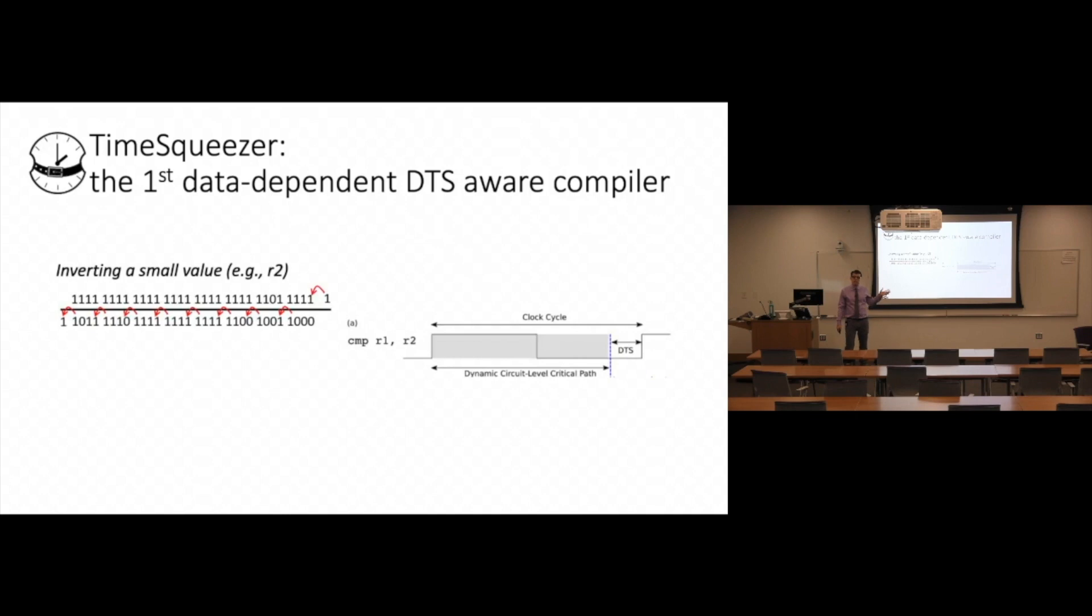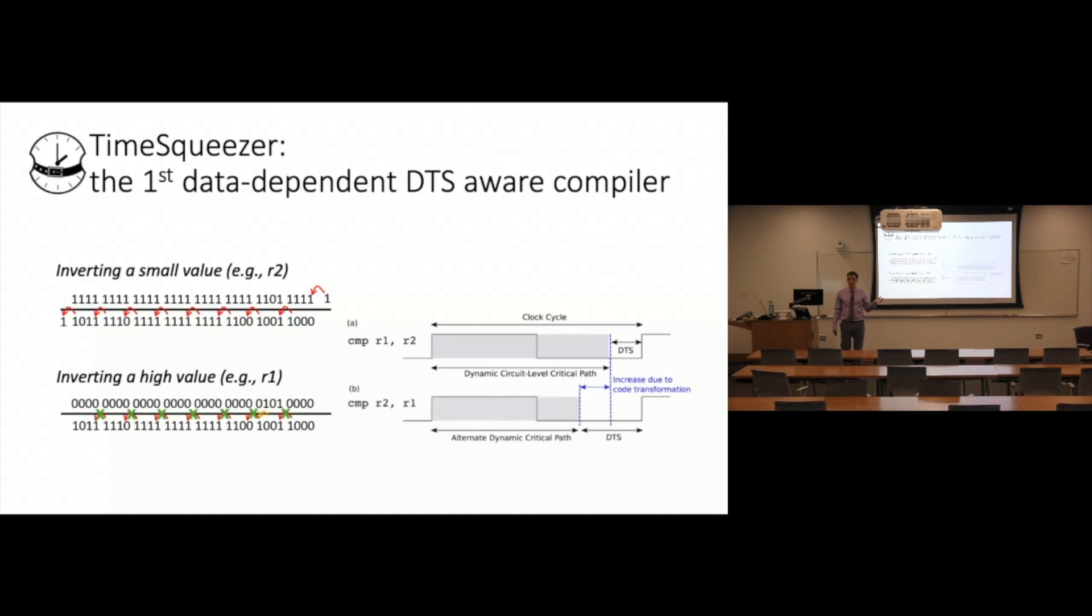For example, current compilers generate compare instructions without considering the impact that operand order has on the timing slack of the underlying architecture. This leads to low timing slack every time the second operand holds a low value. Our compiler instead generates compare instructions by placing the register that is more likely to hold a high value as the second operand, leading to higher timing slack, which translates into energy savings.